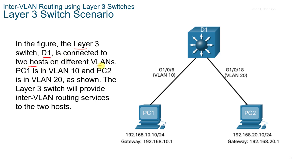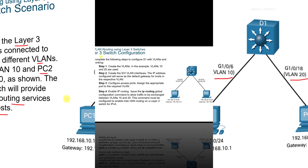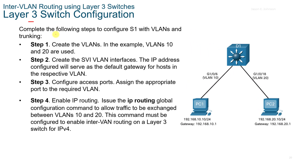To configure a Layer 3 switch with VLANs and trunking, complete the following steps: create the VLANs, create the SVI VLAN interfaces and configure IP addresses to serve as the default gateway, configure the access ports and assign appropriate ports to the required VLANs, then enable IP routing using the IP routing global config command. This allows traffic to be exchanged between VLANs 10 and 20, and this command must be configured to enable routing on a Layer 3 switch for IPv4.